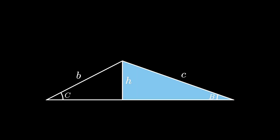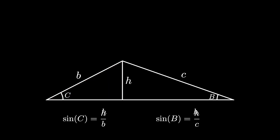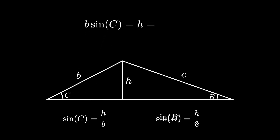This altitude cuts the triangle into two right triangles. From the first one, we see that the sine of angle B equals H divided by C, as H is the opposite side and C is the hypotenuse. From the other right triangle, we see that the sine of C is equal to H divided by B, as H is the opposite side and B is the hypotenuse. So H equals B times sine of C, and H equals C times sine of B.